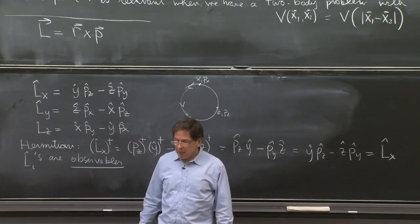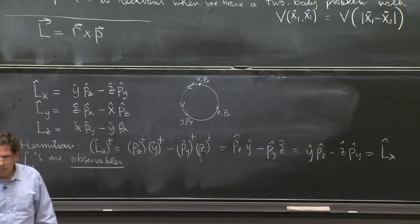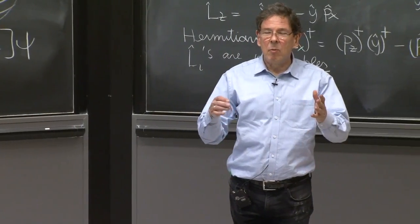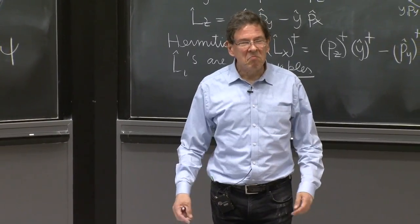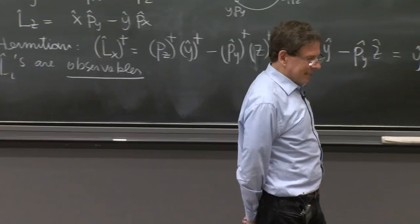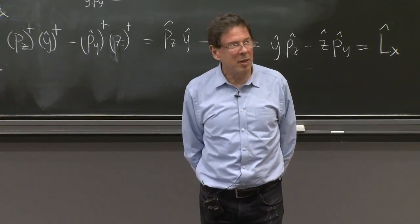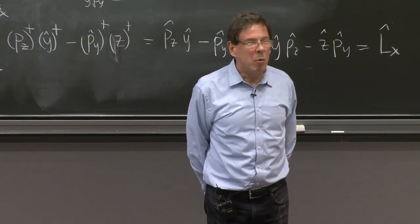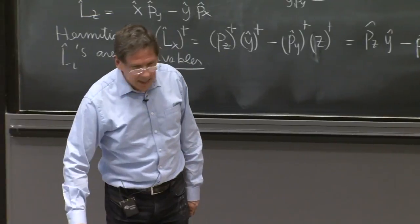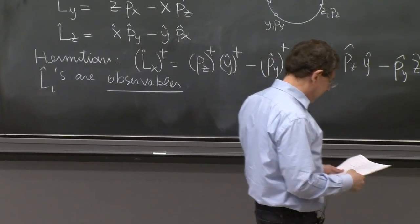But there are funny properties with these operators. They're not all that simple in some ways. So next, we have these operators. Whenever you have quantum operators, the thing you do next is compute their commutators, just like we did with x and p. We wanted to know what that commutator is. We want to know what is the commutator of this L operator.